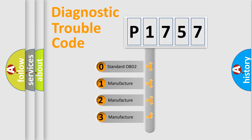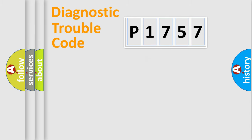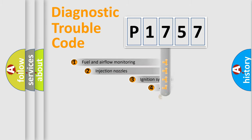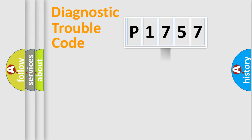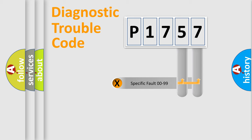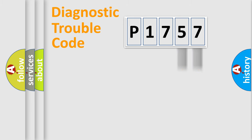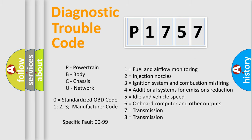If the second character is expressed as zero, it is a standardized error. In the case of numbers 1, 2, or 3, it is a more specific expression of a car-specific error. The third character specifies a subset of errors. The distribution shown is valid only for the standardized DTC code. Only the last two characters define the specific fault of the group, and such a division is valid only if the second character is expressed by the number zero.